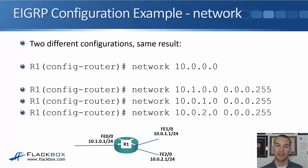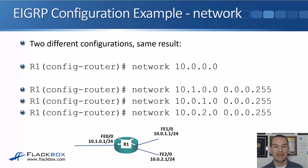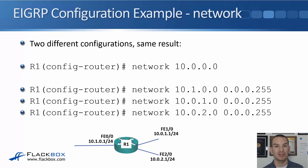Some more examples: on router R1 with the same interfaces — 10.1.0.1, 10.0.1.1, and 10.0.2.1 — saying 'network 10.0.0.0' matches all of them and EIGRP is enabled on all interfaces, advertising the /24s. Alternatively, you could use three separate statements: 'network 10.1.0.0 0.0.0.255', 'network 10.0.1.0 0.0.0.255', and 'network 10.0.2.0 0.0.0.255' to get the same result. If you only wanted to advertise 10.0.2, you would use just the third statement, which matches only FastEthernet 2/0.